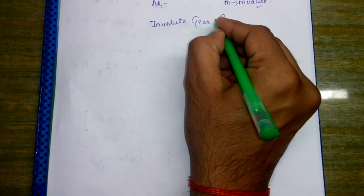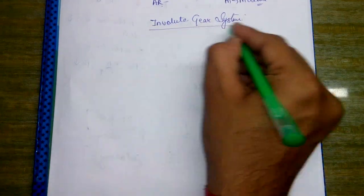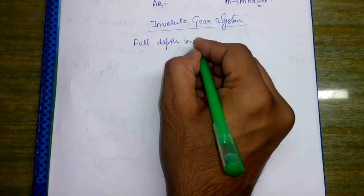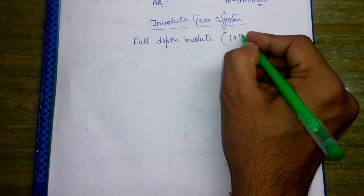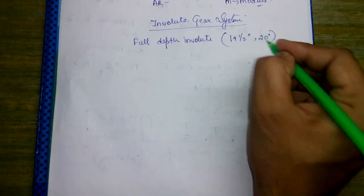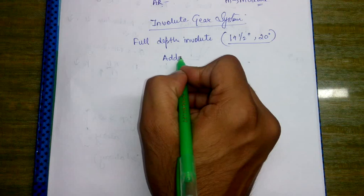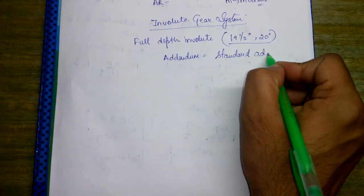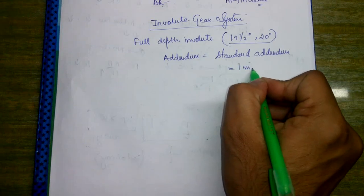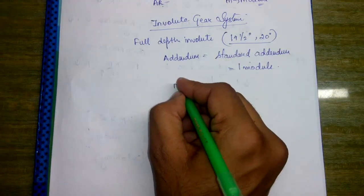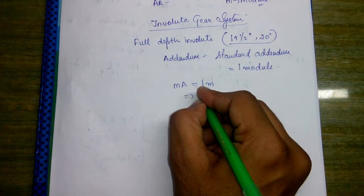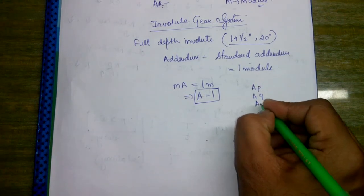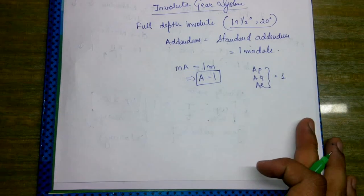In the involute gear system we first have to study about the full depth involute. The full depth involute corresponds to 14 and a half degree or 20 degree pressure angle. Here the addendum equals the standard addendum, which equals one module — meaning M times A equals one module, so A equals one. The addendum of the pinion, gear, and rack are all equal to one in the case of full depth involute.